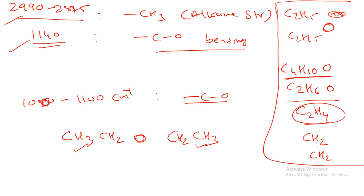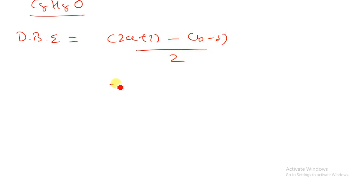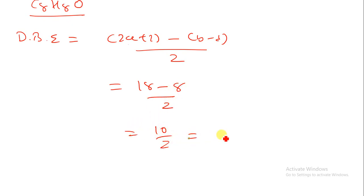Let us understand one more example. The molecular formula is C8H8O. First calculate the DBE: (2×8 + 2 - 8) / 2 = (18-8)/2 = 10/2 = 5.